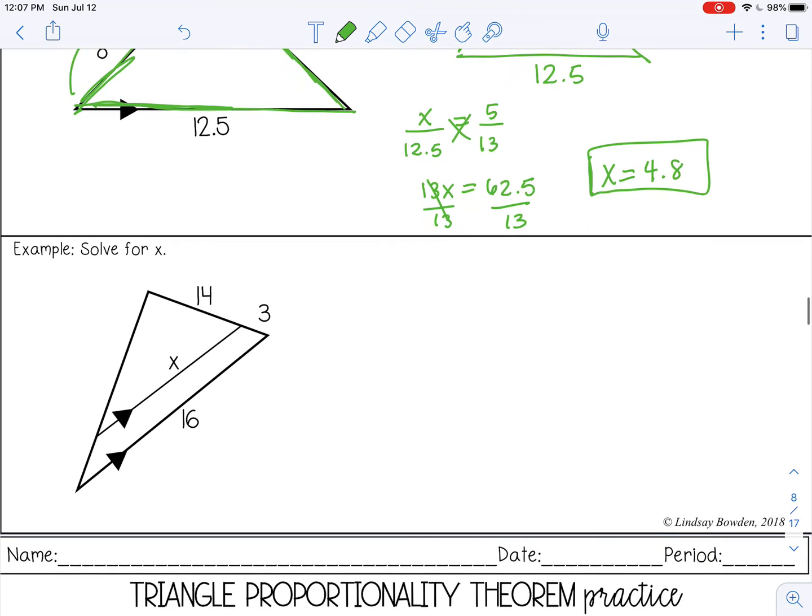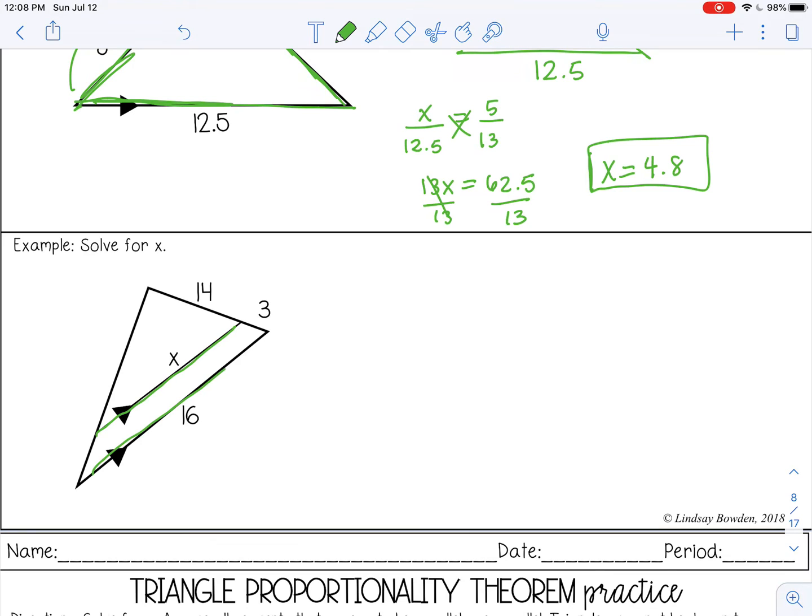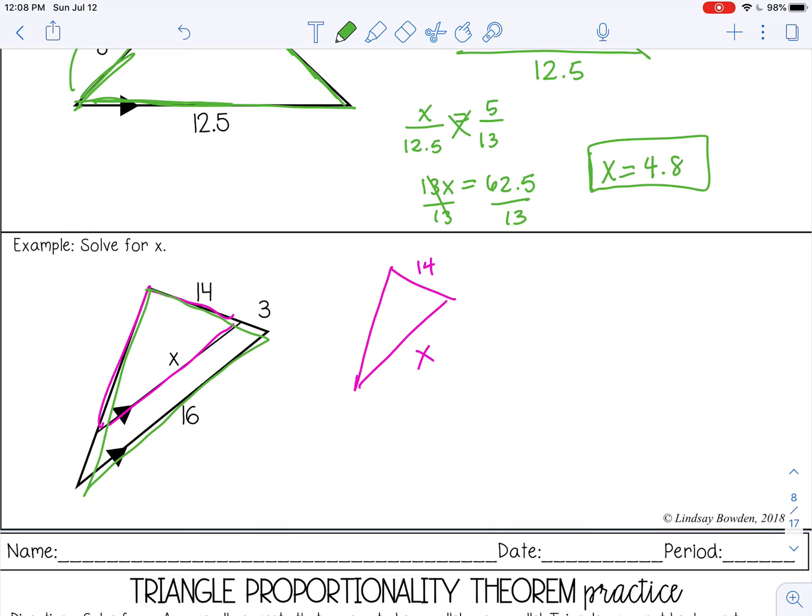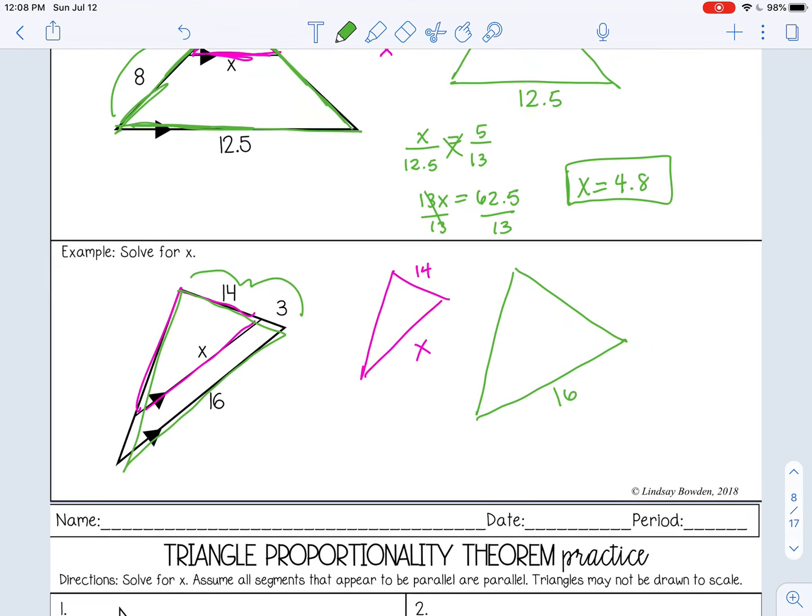In the last example, again, we are given the lengths of the parallel sides. So I need to draw the triangles separately. I want you to pause the video now and see if you can draw the two triangles. I'm going to draw the little triangle first, which is here. And again, I'm going to try to draw it like it actually looks in the picture. So 14 and x, and then I have the whole triangle. So this would be 16. This whole length over here would be 17.